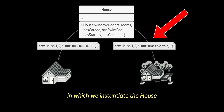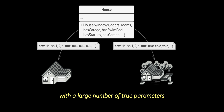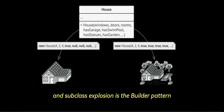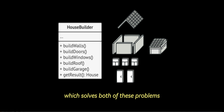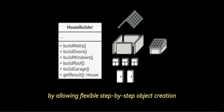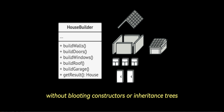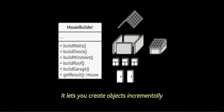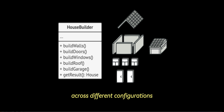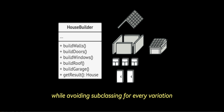The solution to monstrous constructors and subclass explosion is the builder pattern, which solves both of these problems by allowing flexible, step-by-step object creation without bloating constructors or inheritance trees. It lets you create objects incrementally, reusing the same construction process across different configurations while avoiding subclassing for every variation.